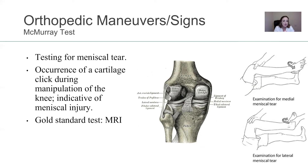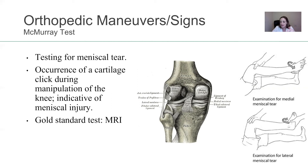So what is happening here? Occurrence of a cartilage click during manipulation of the knee, indicative of meniscal injury. Gold standard test would be an MRI. The meniscus is the padding in between the bones — look at the picture. If something happened to it, you're going to hear this click. You rotate the foot inward and outward at a 90-degree angle. If you hear a click, there's something wrong. So McMurray for meniscal tear, ray for bones.